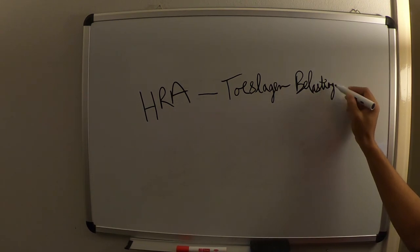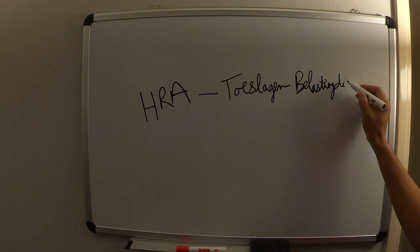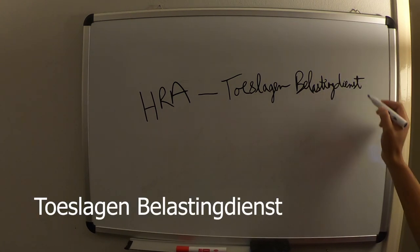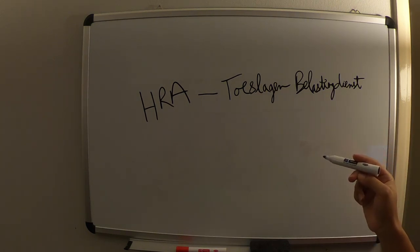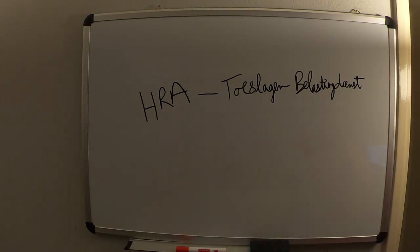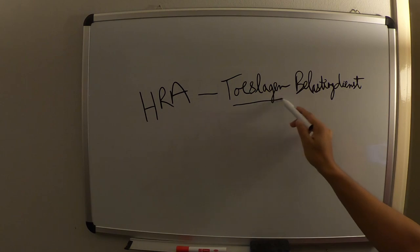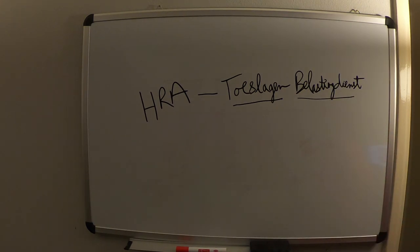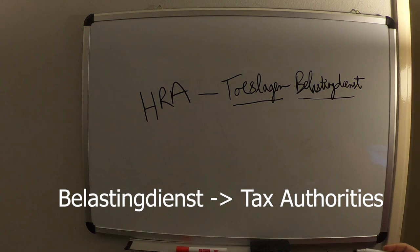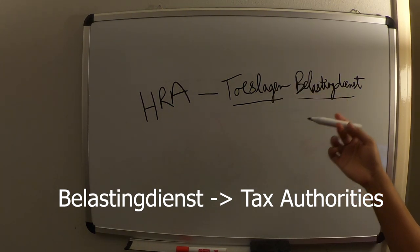It's very difficult to pronounce for an English speaker. In Dutch it's called 'Belastingdienst' — the 'g' is generally pronounced like a hybrid between a 'kh' sound. You need to go to this website for applying for HRA. 'Belasting' basically translates to 'surcharge' and 'dienst' means 'authorities,' so it's the tax authorities website.